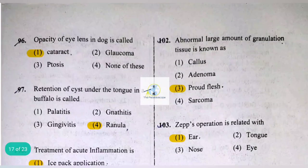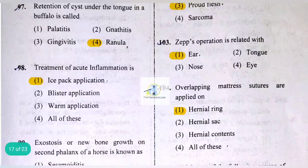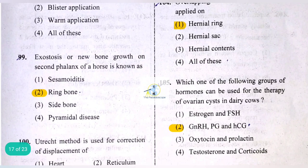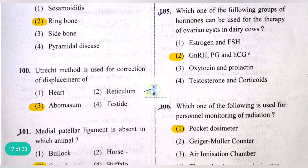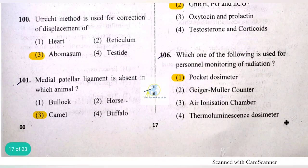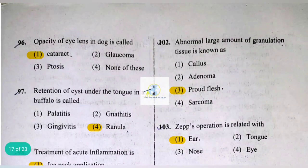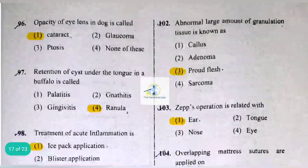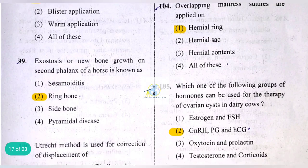Opacity of the lens in dogs is called cataract. Retention of cysts under the tongue is called ranula. Treatment of acute inflammation involves ice pack application. Exostosis of new bone growth on the second phalanx of a horse is known as ring bone. The Utrecht method is used for correction of displacement of abomasum. The medial patellar ligament is absent in the camel. Abnormally large amounts of granulation tissue are known as proud flesh. Zepp's operation is related to the ear. Overlapping mattress sutures are applied on hernia.